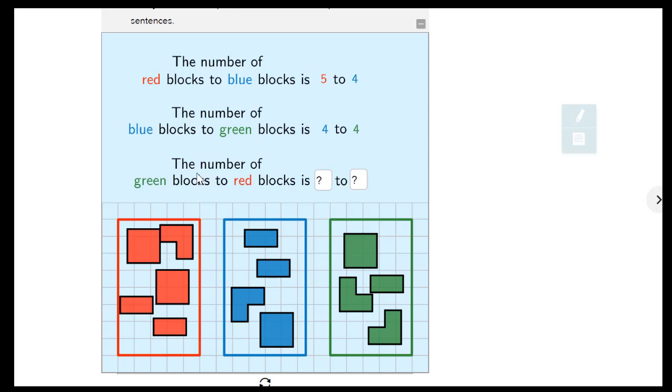And finally, the number of green blocks to red blocks is. So I've already counted my green blocks. I'm going to put those in the first answer box here. It's four. And the number of red blocks, I've already counted that, is five. Put that in that one.